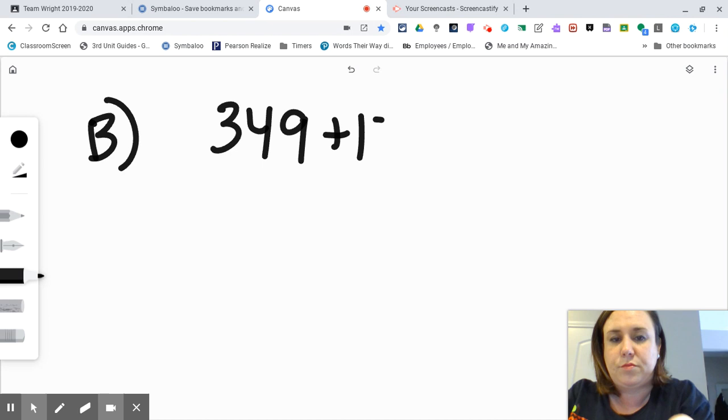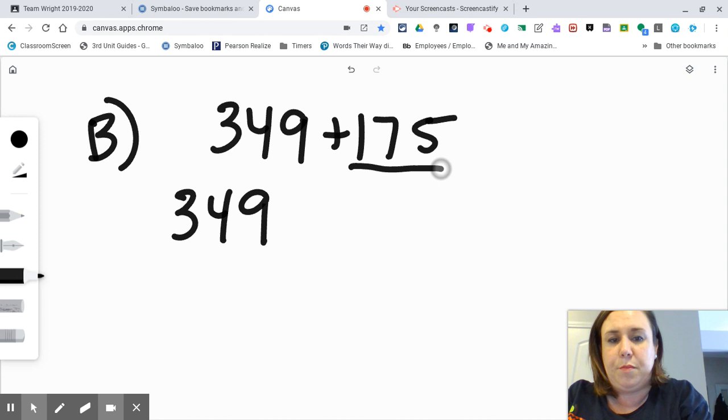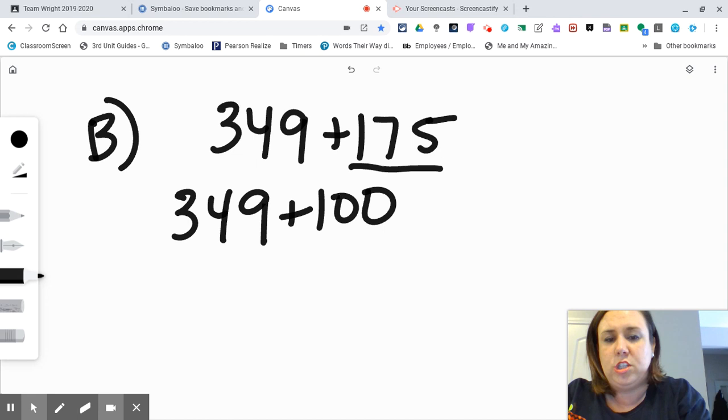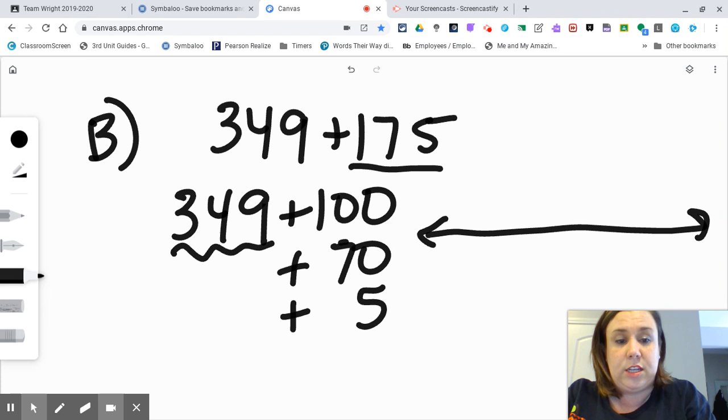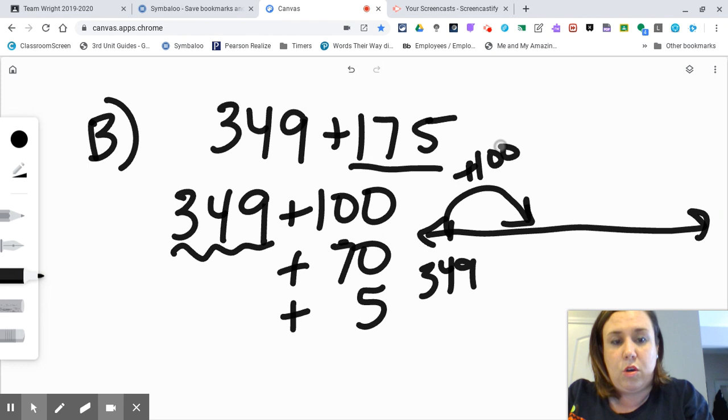I'm gonna start with 349, and I'm gonna add this number in pieces. First I'm gonna add 100, then I'm gonna add 70, then I'm gonna add 5, but I'm starting with this whole number. You can use a number line to show this addition if that helps you create a visual, or you can use the equations: 349 plus 100 gets me to 449.